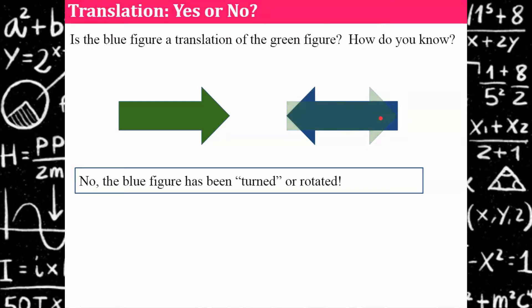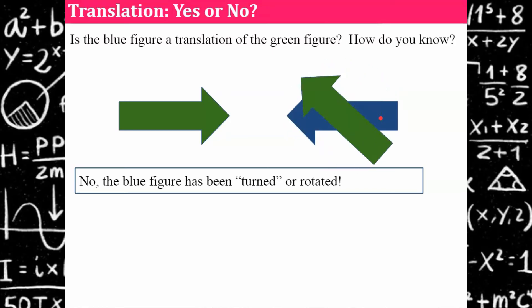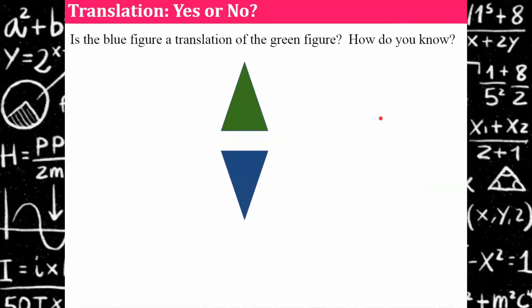Here's an image of it — you can see that we have to turn it in order for it to overlap. How about this one? Is this blue figure a translation of the green figure and how do you know?